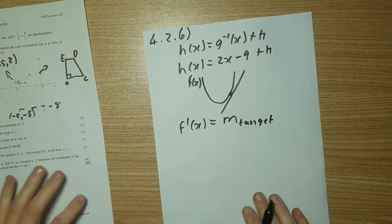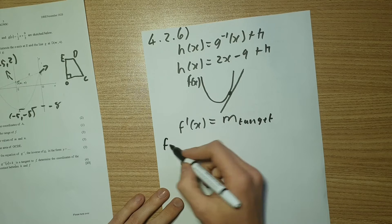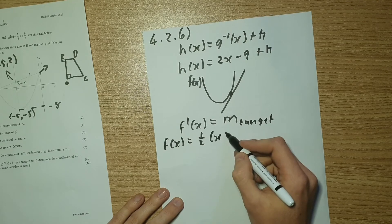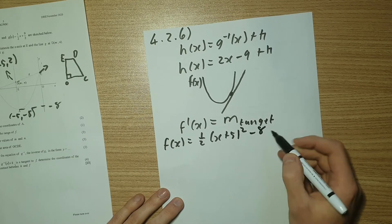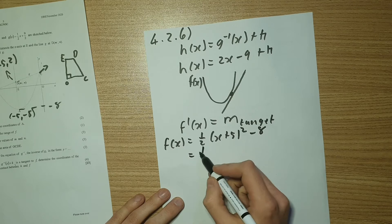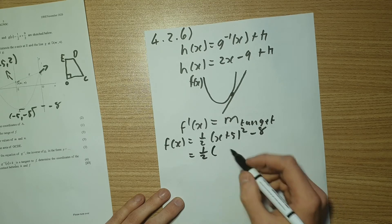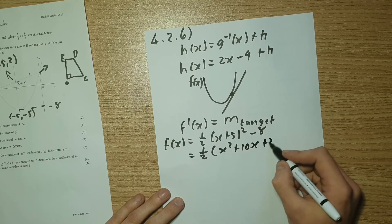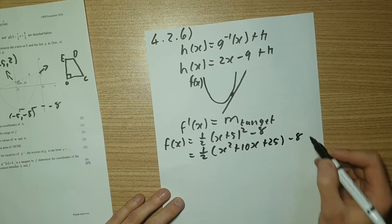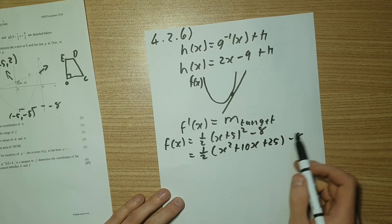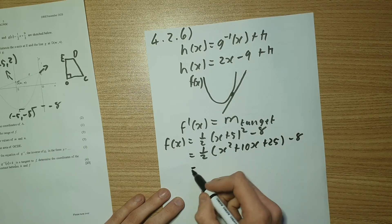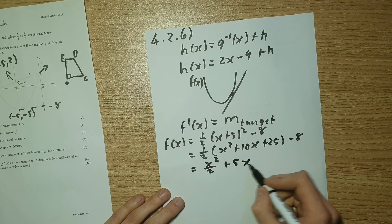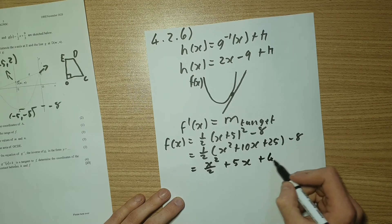So let's find the derivative of F of X. So F of X is given as a half X plus five squared minus eight. So if we sort out the bracket, we're then going to get a half X squared plus 10X plus 25 minus eight.